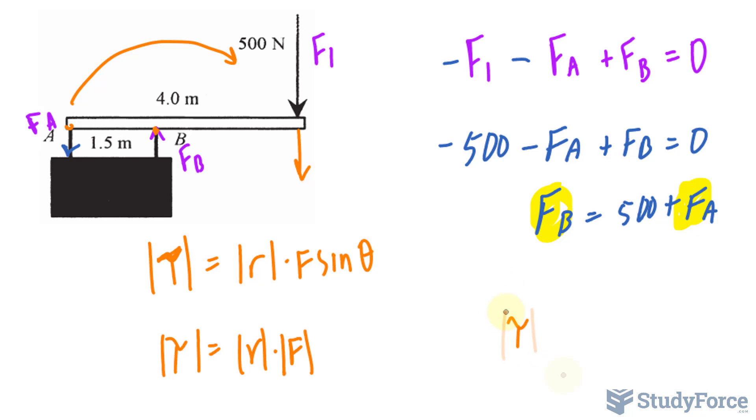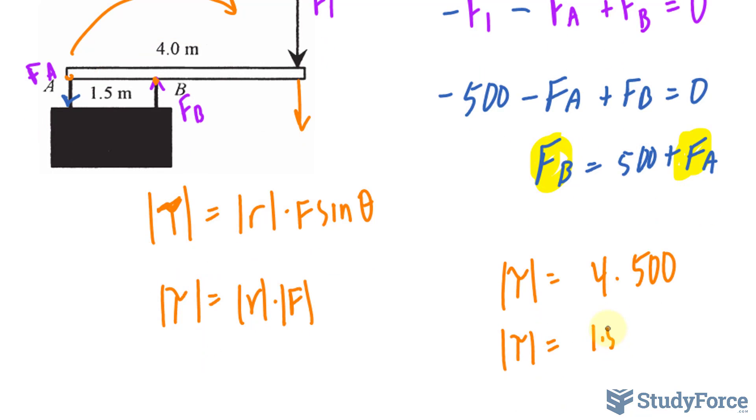The torque there has a radius of 4 times the force is 500. And the torque at B will have a radius of 1.5, and we don't know the force, so I'll continue to call it F sub B.